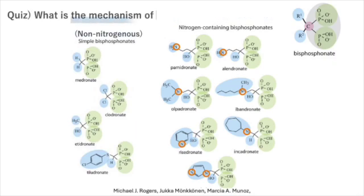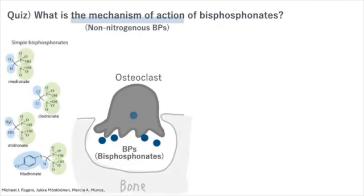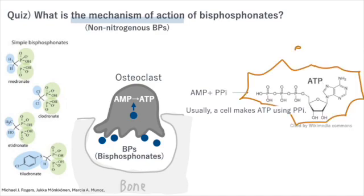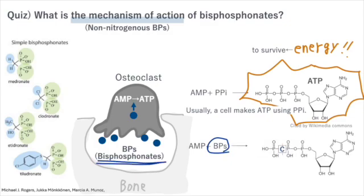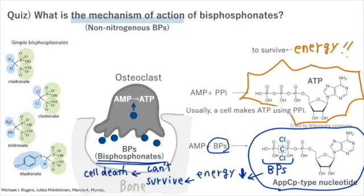What is the mechanism of action of bisphosphonates? Non-nitrogen-containing bisphosphonates are metabolized within the cell into substrates that replace the terminal pyrophosphate group of adenosine triphosphate (ATP), forming a non-functional molecule that competes with ATP in cellular energy metabolism. This process initiates osteoclast apoptosis, leading to a decrease in bone breakdown.